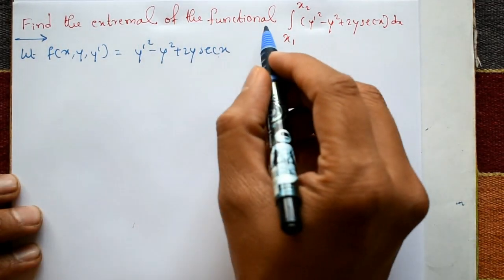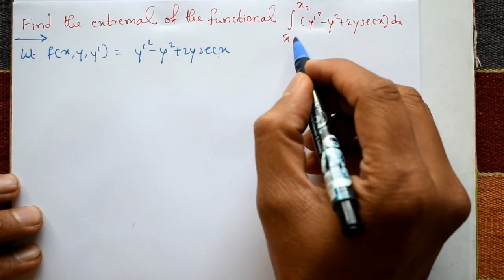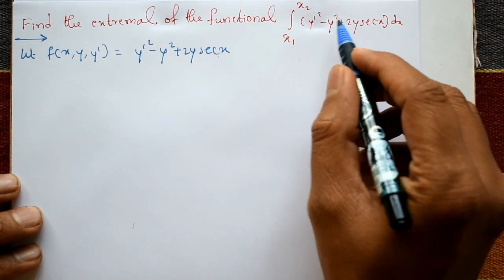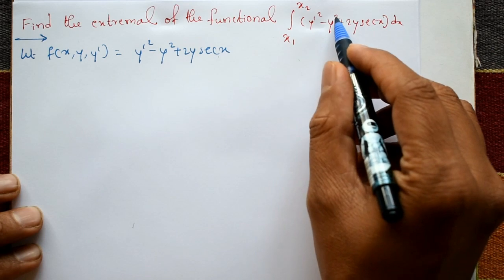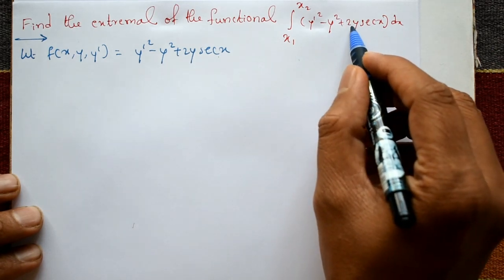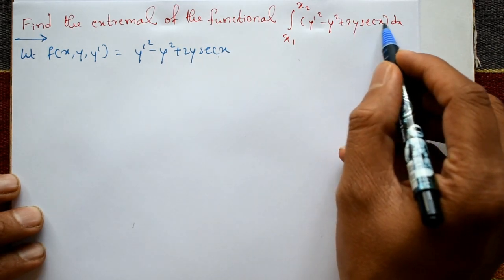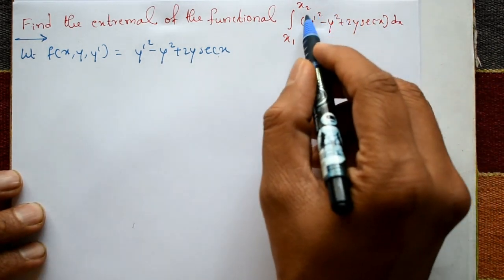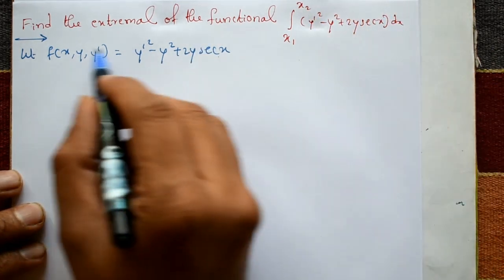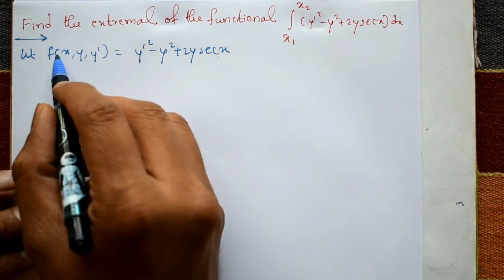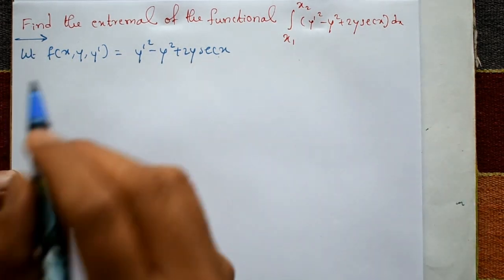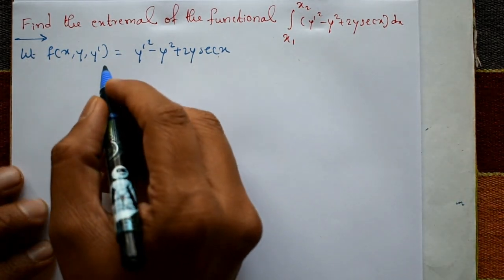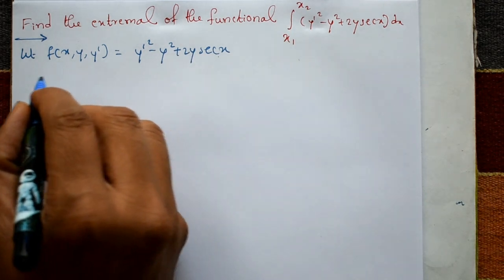Find the extremal of the functional — the integral from x1 to x2 of (y'² - y² + 2y·sec x) with respect to x. Taking this as f(x, y, y').